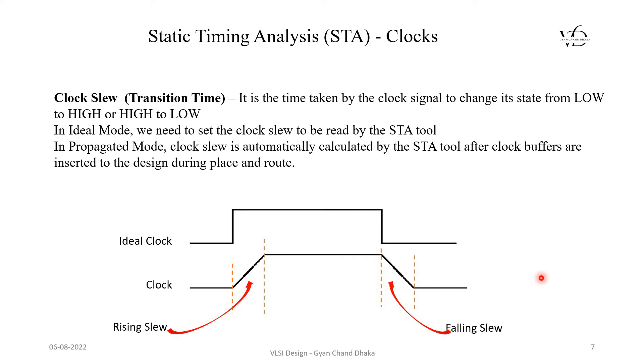Clock slew is also called transition time. If you see here, this is our ideal clock, but there is nothing like ideal in practical design. There will be some rising time and some falling time. The rising slew is the rate at which the clock signal transitions from low to high.